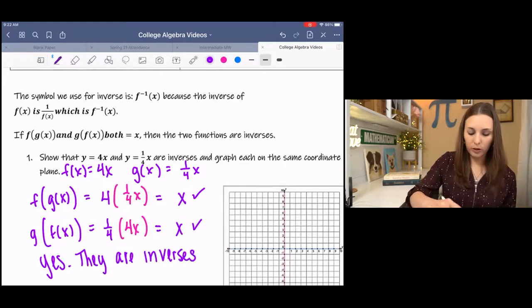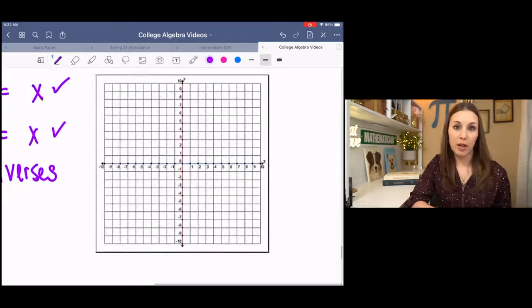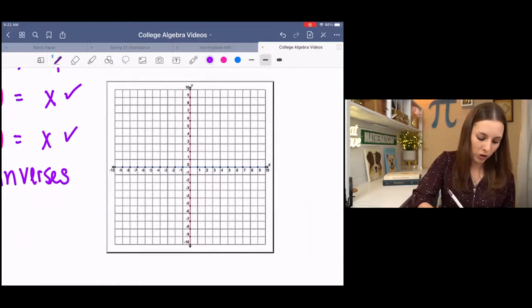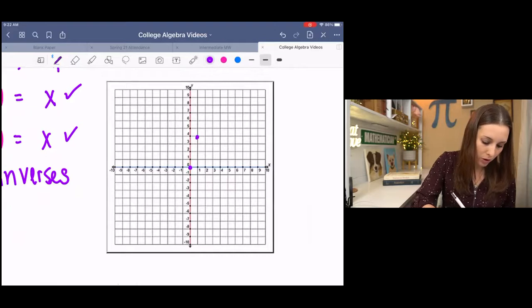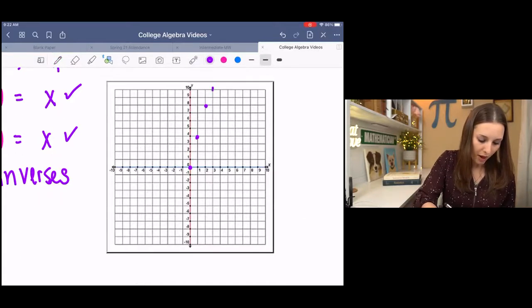Now, if we look at the graph of those two equations, we might notice something about their intersection. The first equation has a y-intercept of zero and a slope of four. So we can draw that line.